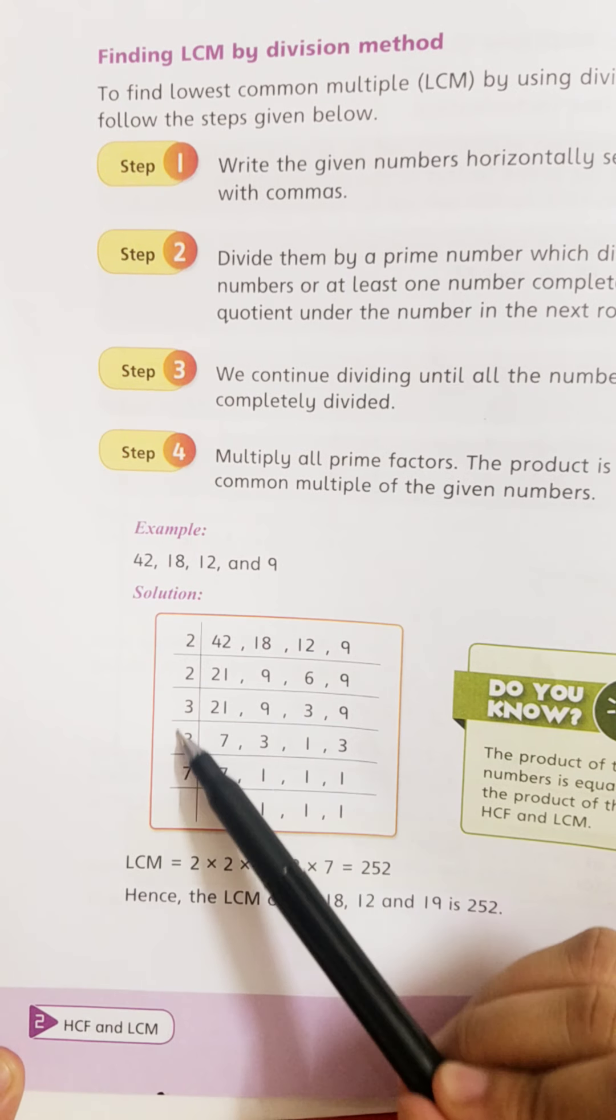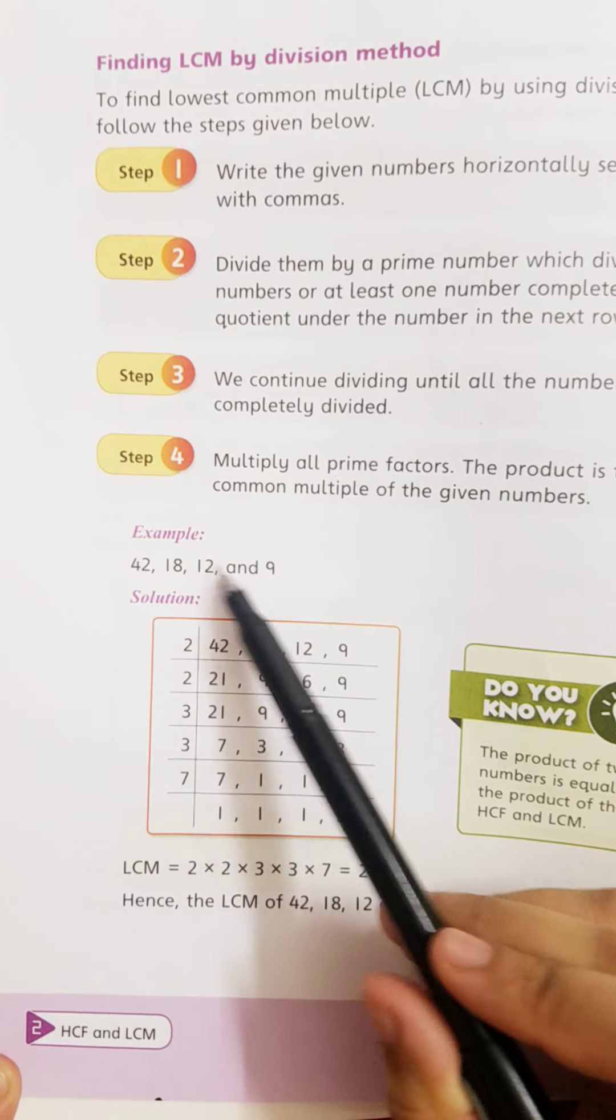These are the prime factors of all four numbers. To find LCM, write all these prime factors with multiplication signs and multiply them. 2 twos are 4, 4 threes are 12, 12 threes are 36, and 36 sevens are 252. 252 is the LCM of these four numbers.